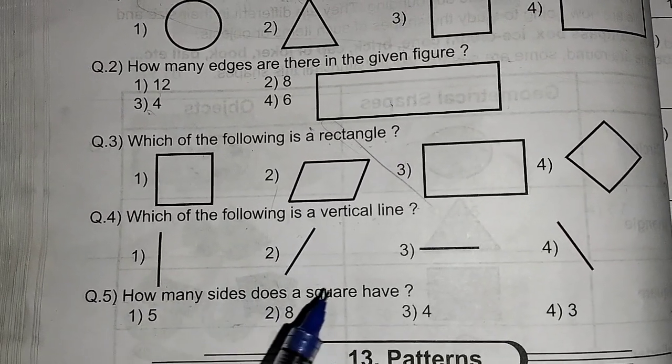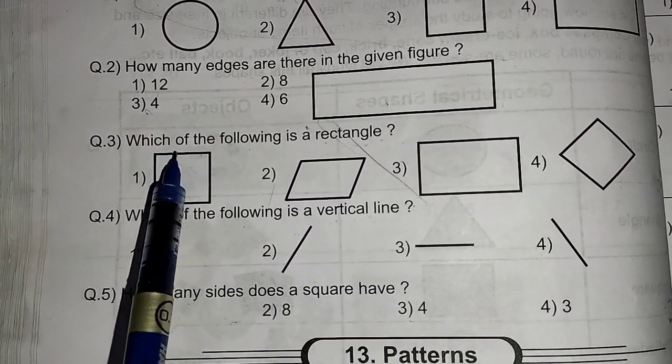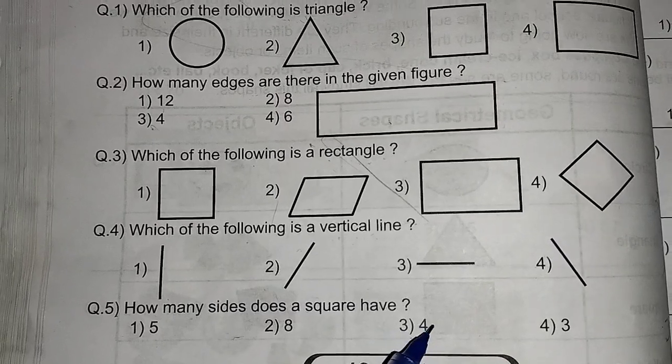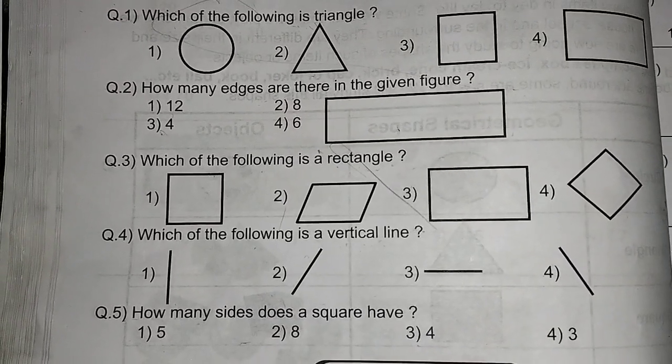How many sides does a square have? A square has how many sides? Three lines. So option number three is the right answer. Okay.